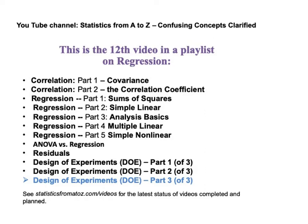This is the 12th video in my playlist on regression. It is called Design of Experiments Part 3 of 3. Previously I had uploaded 11 other videos on regression: two on correlation and covariance, five videos on regression itself, one video comparing ANOVA to regression, one on residuals — the errors in the regression model — and the first two of three on Design of Experiments, DOE, which is the discipline used to validate regression models.